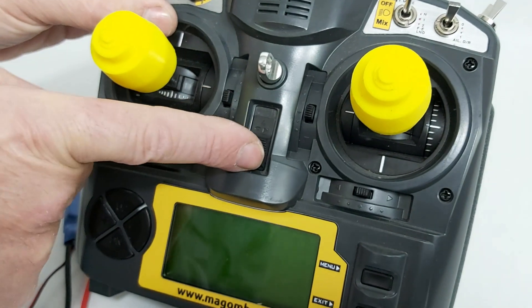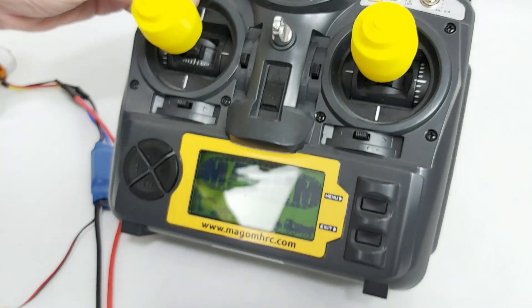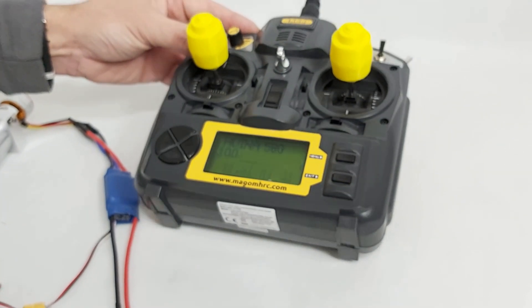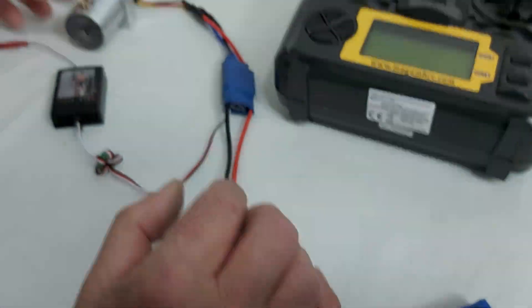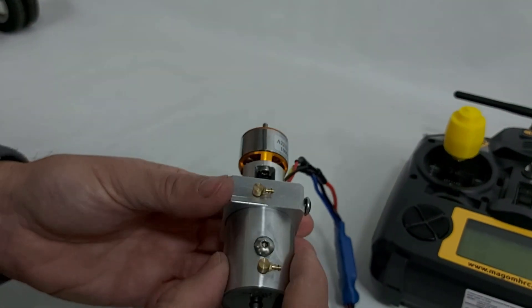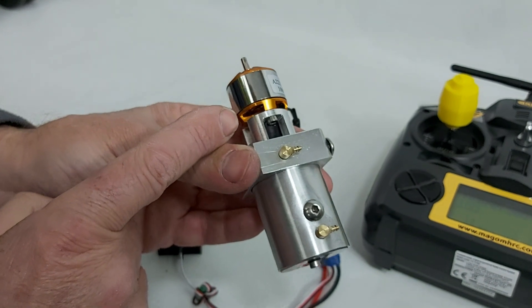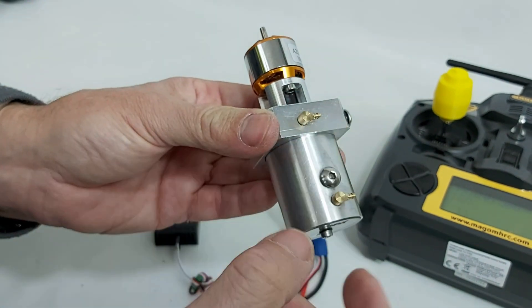We turn on the transmitter, then connect the battery. The engine starts to beep, which tells us it has entered programming mode.